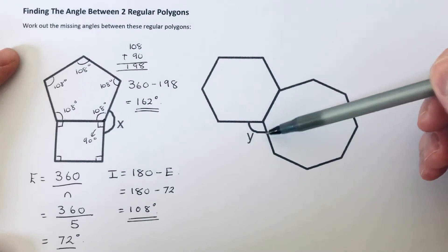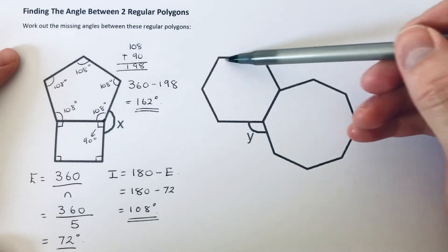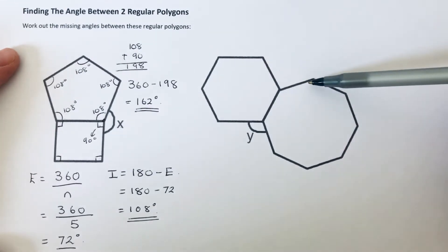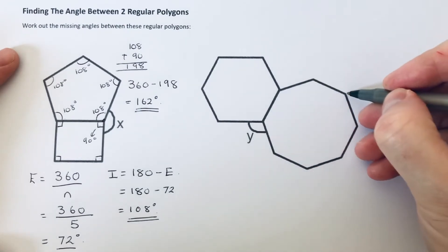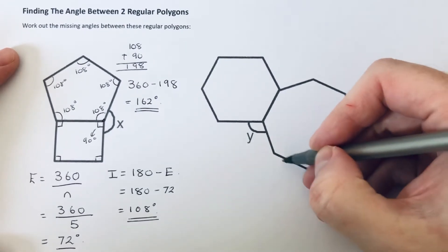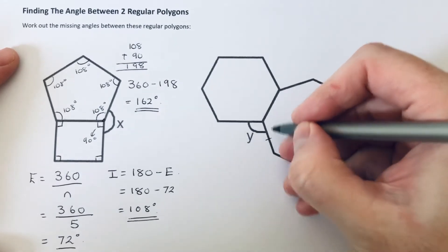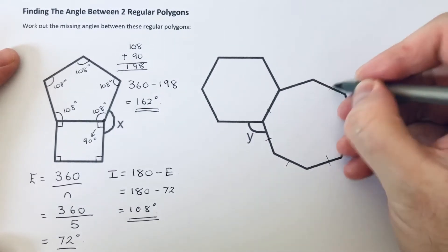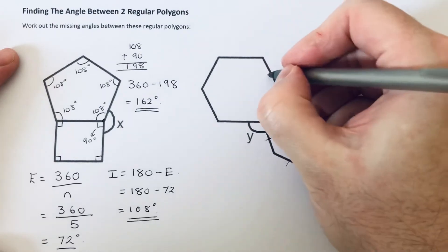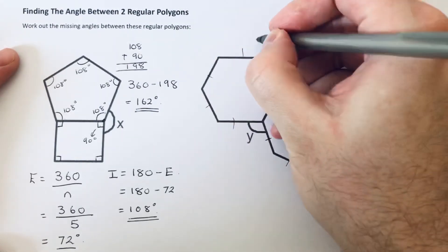So this time we've got to find the angle Y and it's between a regular hexagon and we've got a 1, 2, 3, 4, 5, 6, 7, 8, we've got a regular octagon here.